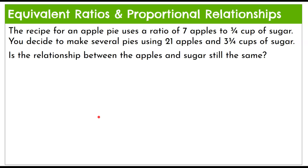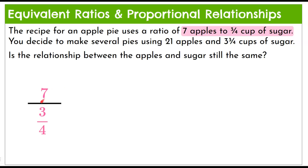Now let's talk about equivalent ratios and proportional relationships — another strategy to determine if two real-world relationships are proportional. An apple pie recipe uses a ratio of seven apples to three-fourths cup of sugar. We decide to use 21 apples and three and three-fourths cups of sugar, and we want to know if the relationship between apples and sugar is still the same. We'll write our first ratio as seven over three-fourths — a complex fraction — which is still a ratio.